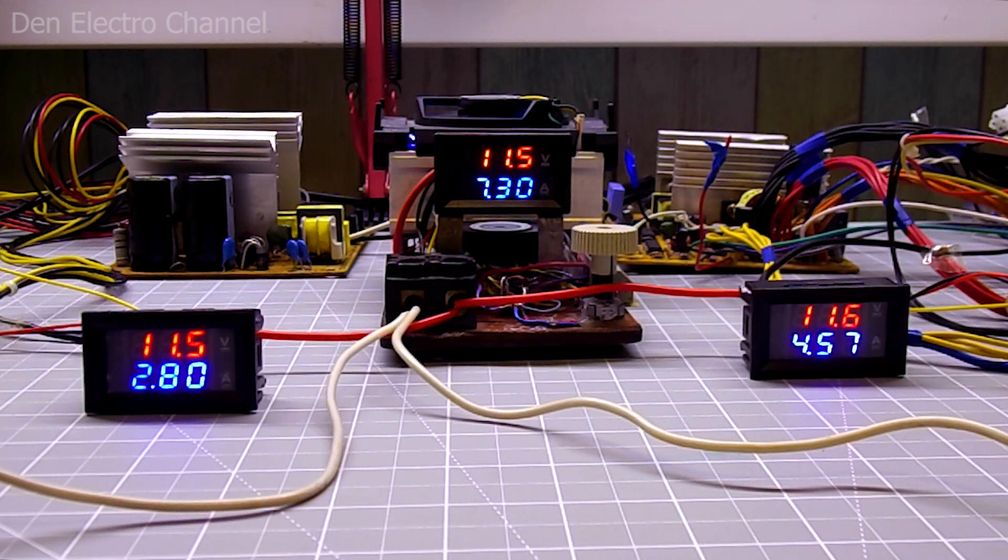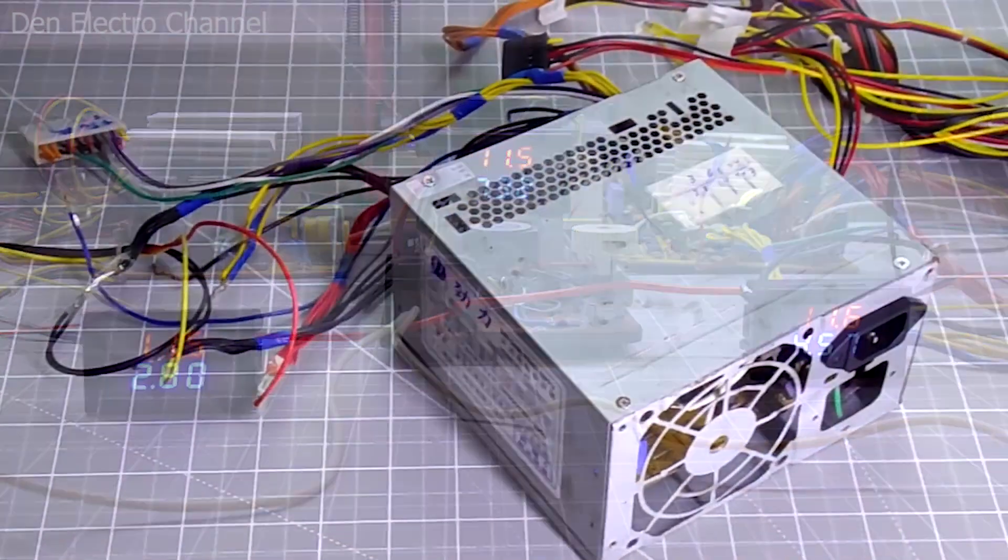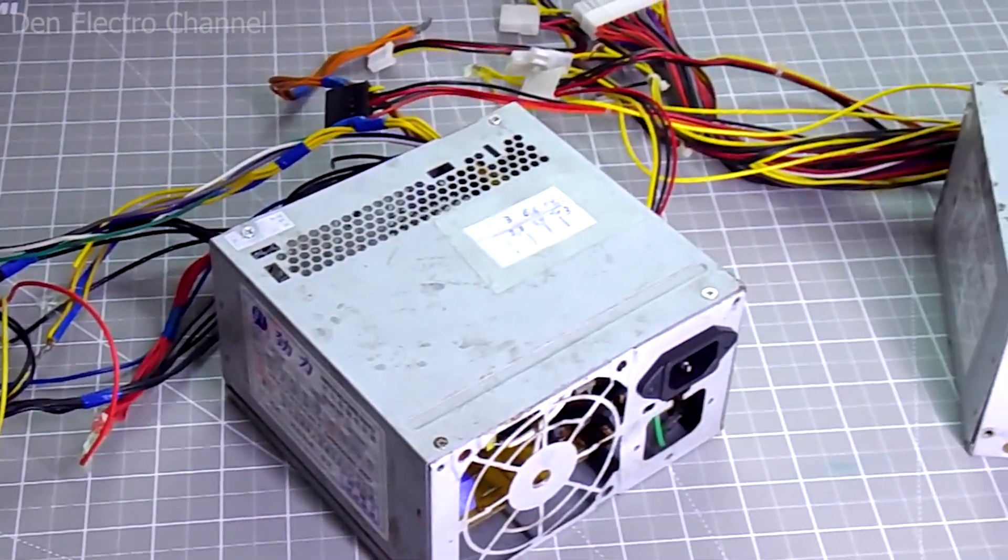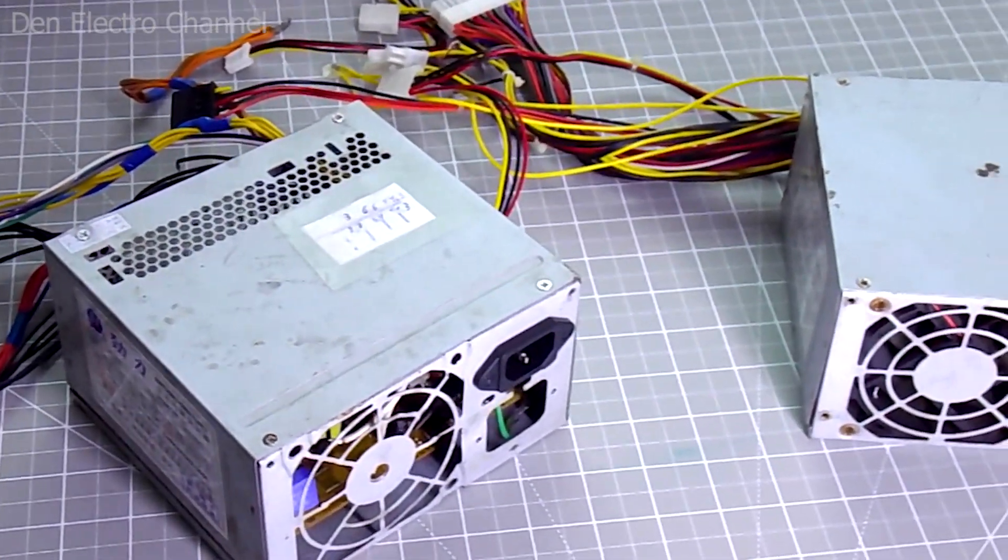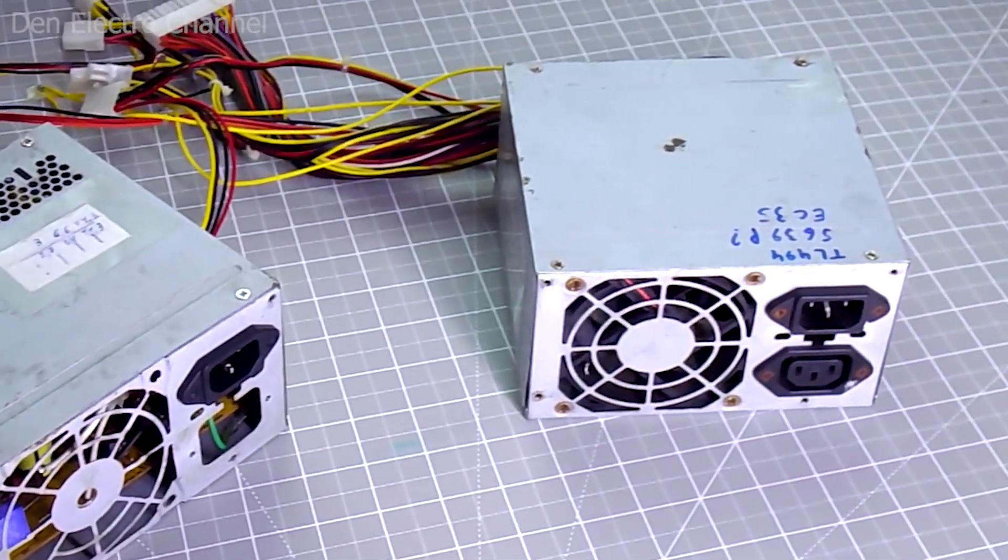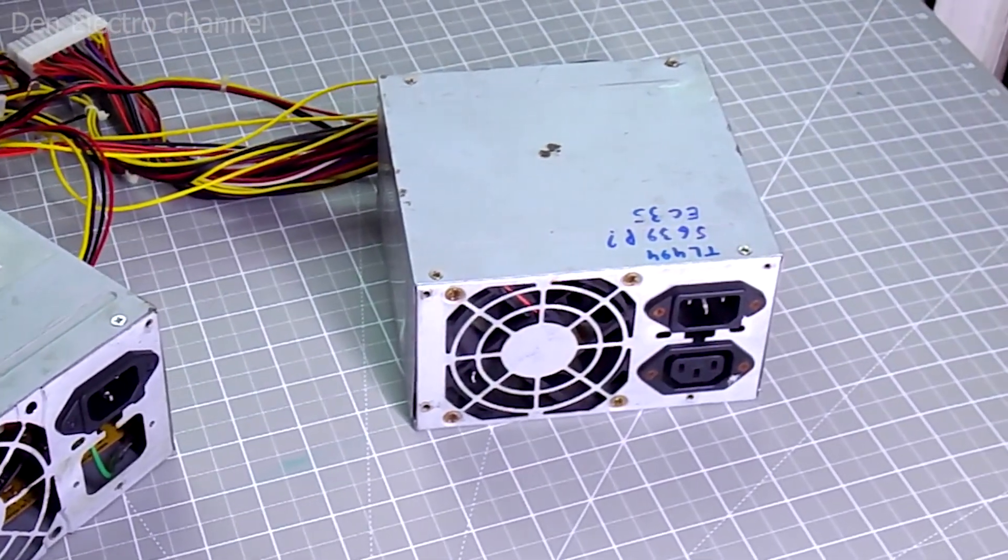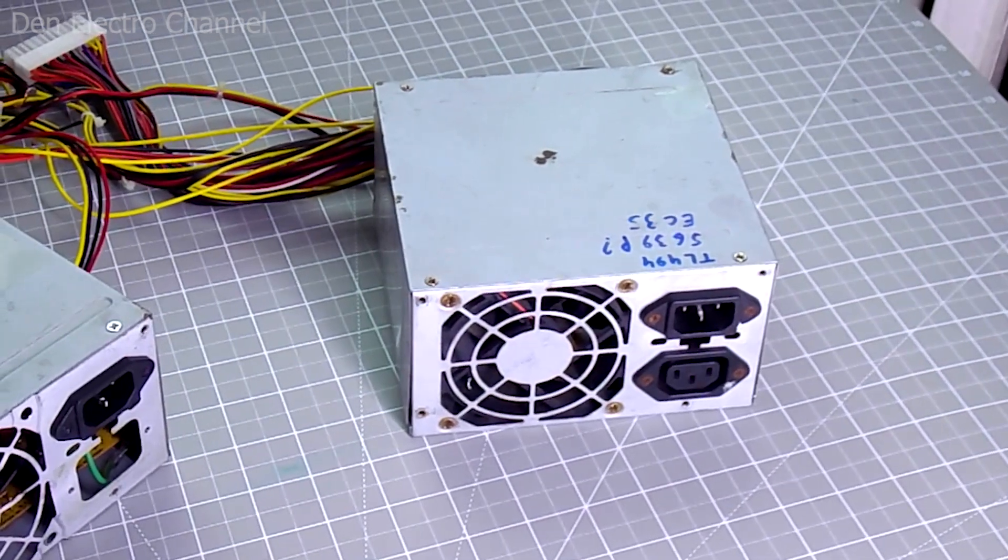Therefore, when connecting power supplies in parallel, pay attention to this. If the power supplies are different and their voltage is different, then the load will not be divided equally, but most of all where there was high voltage. Therefore, before working in parallel mode, it is necessary to measure the current so that it does not turn out that one of the power supplies is loaded more than its characteristics allow.